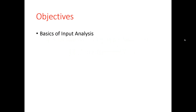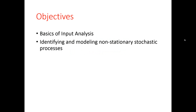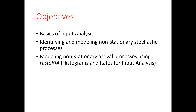As for the objectives for this video, we're going to talk very briefly about basics of input analysis, and then we will discuss how we can identify and model non-stationary stochastic processes using an example of data collected from a restaurant. Finally, we will discuss how we can use Historia — histograms and rates for input analysis — as a tool to identify and model non-stationary arrival processes.